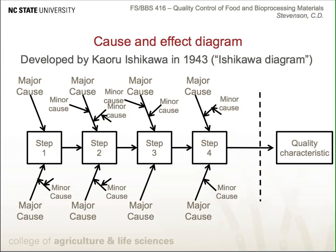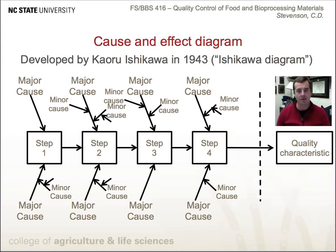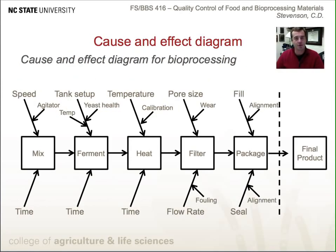Next, we have the cause and effect diagram. This was developed by Kaoru Ishikawa in 1943. Sometimes you might hear it referred to as the Ishikawa diagram. These diagrams are useful because you can evaluate the causes that lead to effects and determine whether they lead to positive or negative effects. It's a matter of identifying an effect — some sort of quality characteristic — and then identifying the causes that lead to it. With each step there can be major and minor causes.